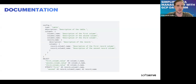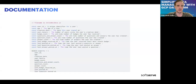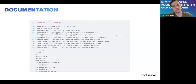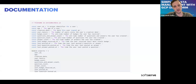You might have different models with the same columns and want to avoid duplicate descriptions. The solution exists inside Dataform — you can define descriptions directly in a JavaScript file inside the includes folder, define constants there, export them, and use them as references inside your models to avoid duplication.